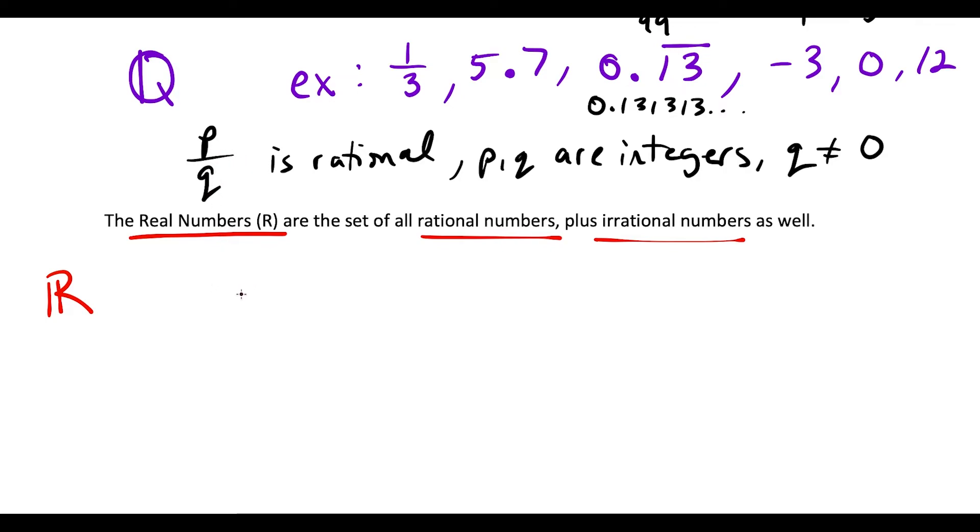Some popular ones are Euler's number e, we have pi, and then we have the square root of non-perfect squares, like square root 2, square root 3. Square root 4 wouldn't work because the square root of 4 is equal to 2, so this would be a rational number and counts as one of our natural numbers, whole numbers, integers. But if I continue I could go to square root 5, square root 6, square root 7.